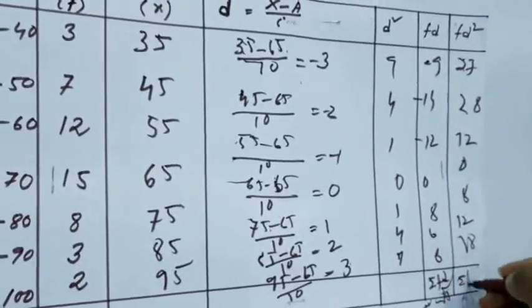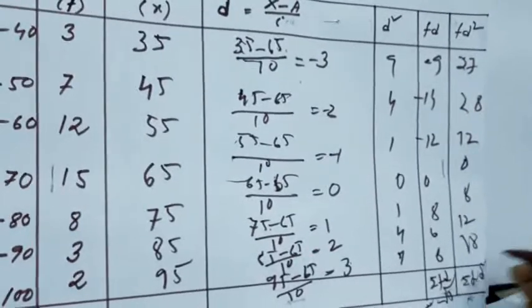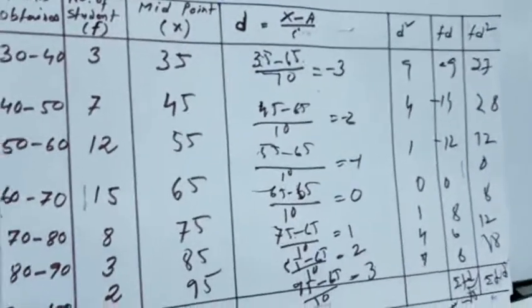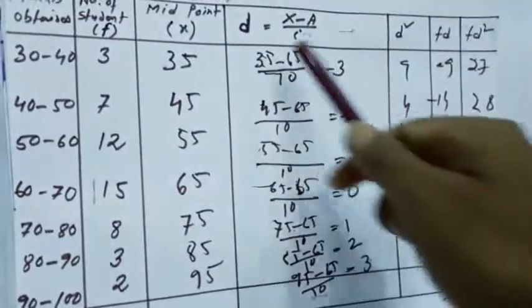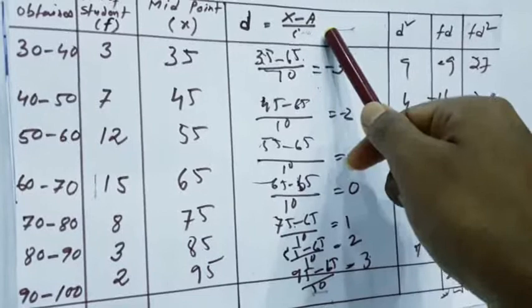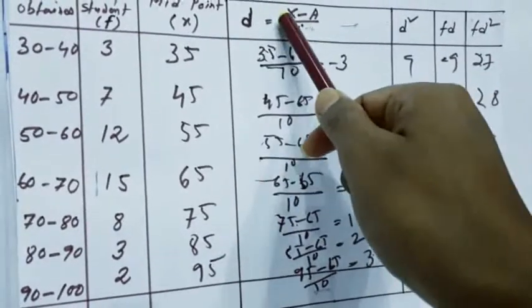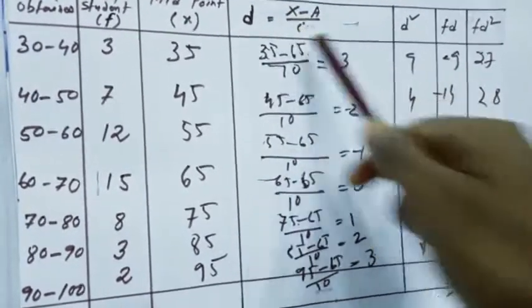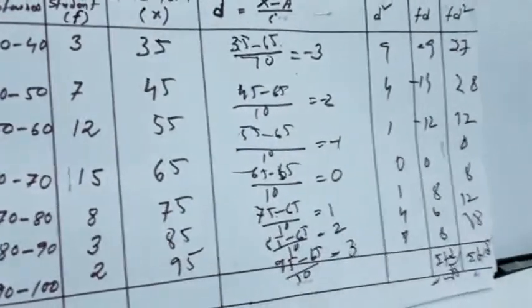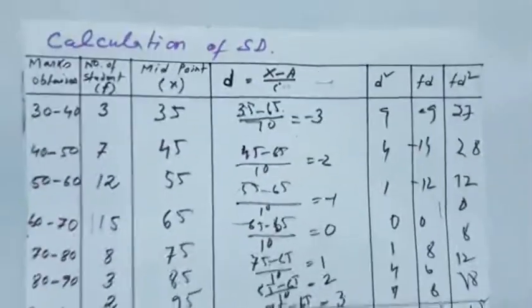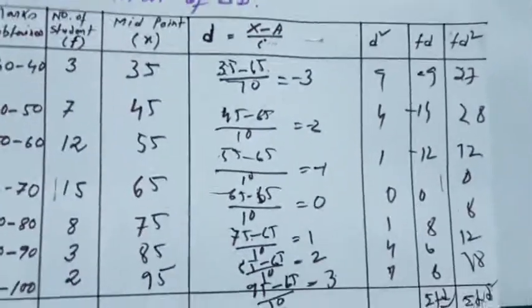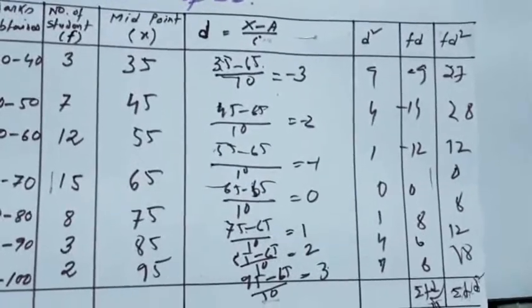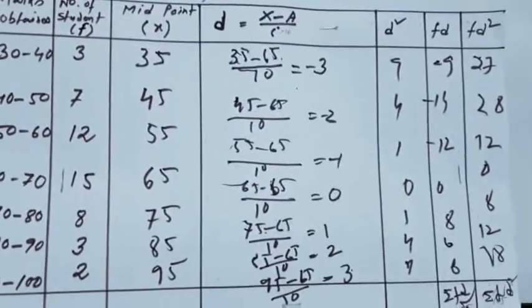Now also you sum it, FD square. In this way, you get the, just remember it, I have divided X minus A by 10. In the formula, I will multiply it by 10. In this way, you can make the table.